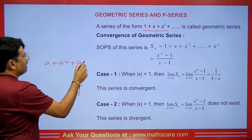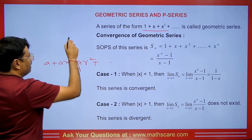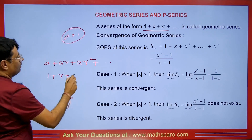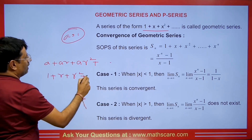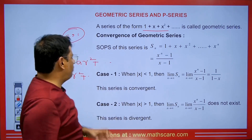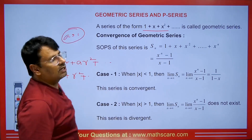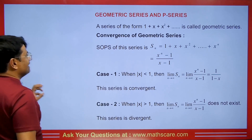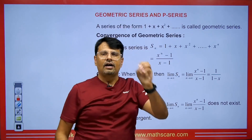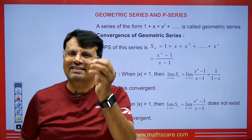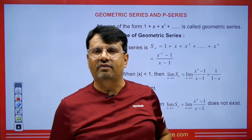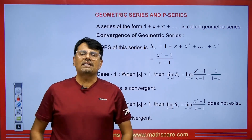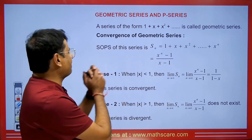If we take the value of a as 1, then we have 1 plus r plus r squared. So here r is the common ratio, and we have a geometric series. If this series is given to us, when will it be convergent? For what value of x will it converge? For what value of x will it diverge? For what value will it oscillate? I will explain it to you in detail.